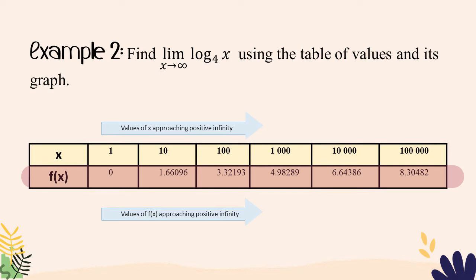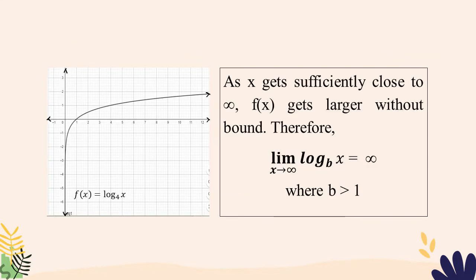Now look at the values of f(x). What is the trend — are the values increasing rapidly or decreasing rapidly? Let's verify using the graph of our function. Since we are looking for the limit as x approaches positive infinity, trace the graph from left to right. We can see that as x approaches positive infinity, the values of f(x) are also increasing rapidly. Therefore, the limit of log base b of x as x approaches positive infinity, where b is greater than 1, is equal to positive infinity.